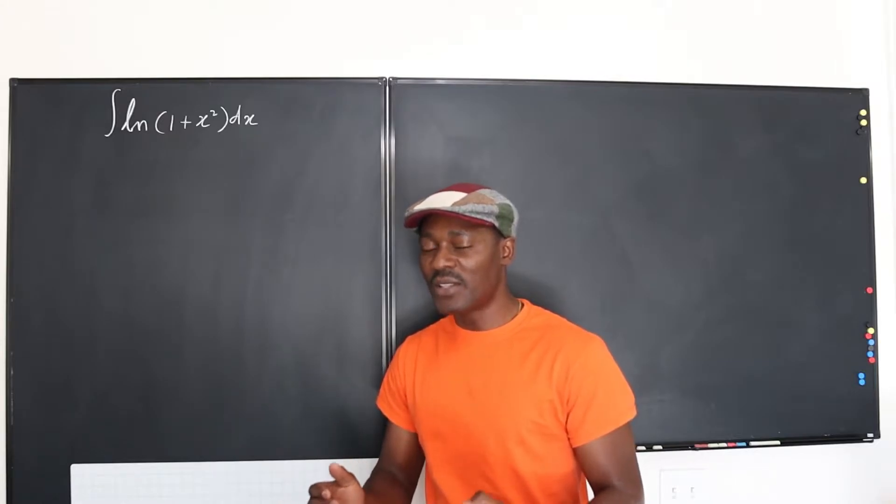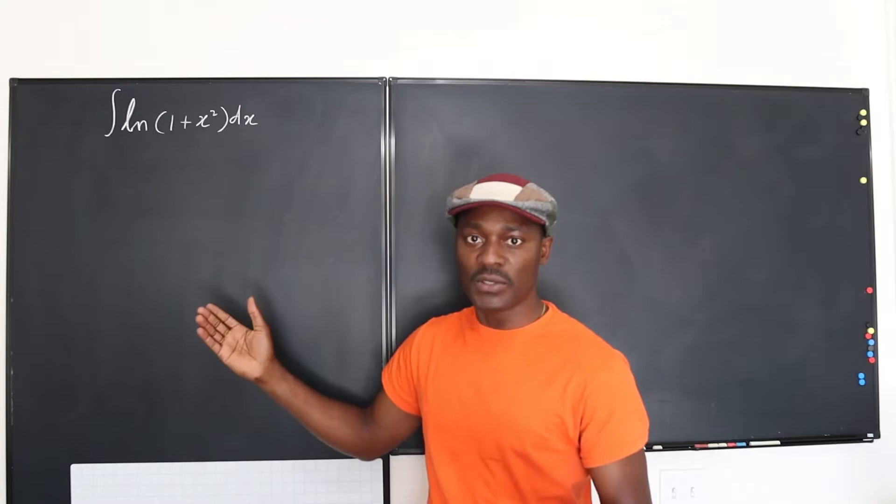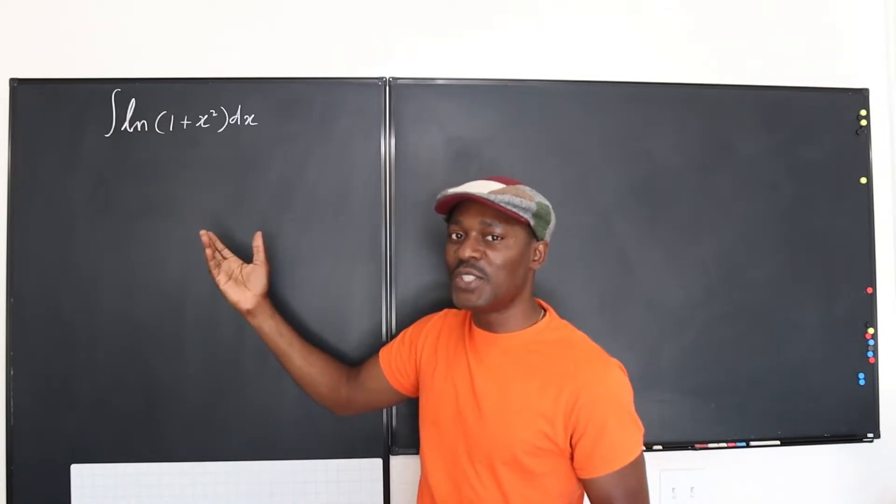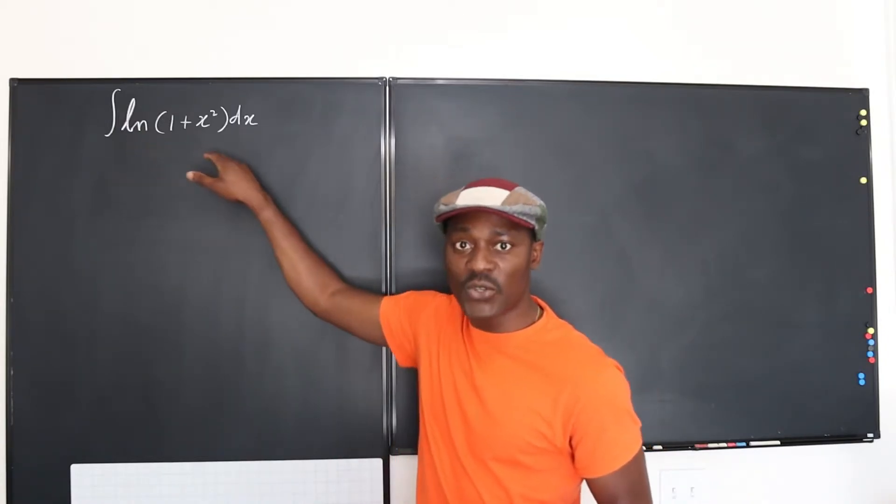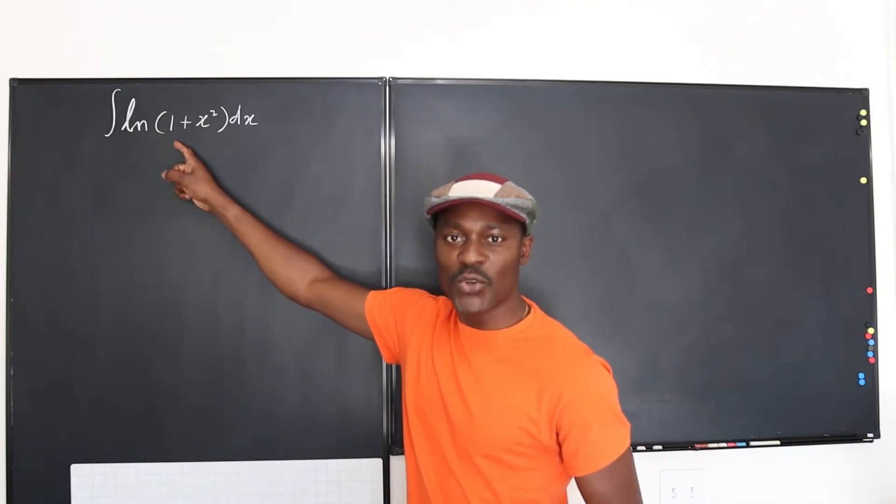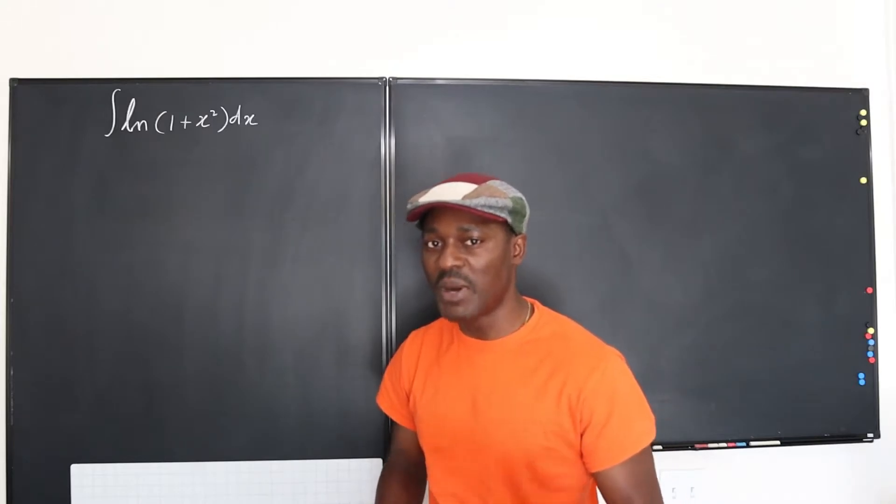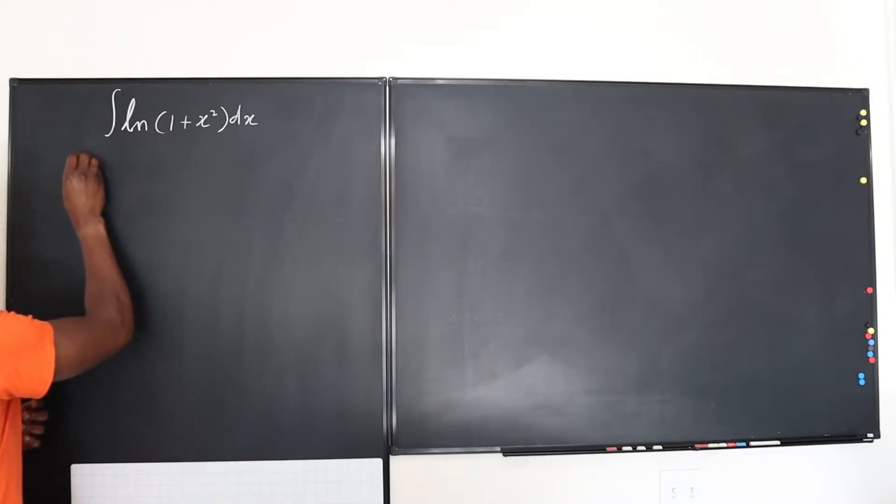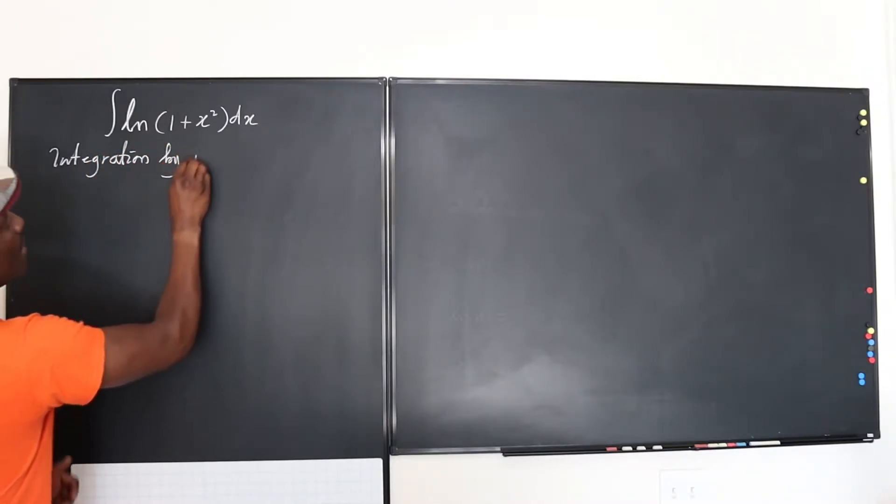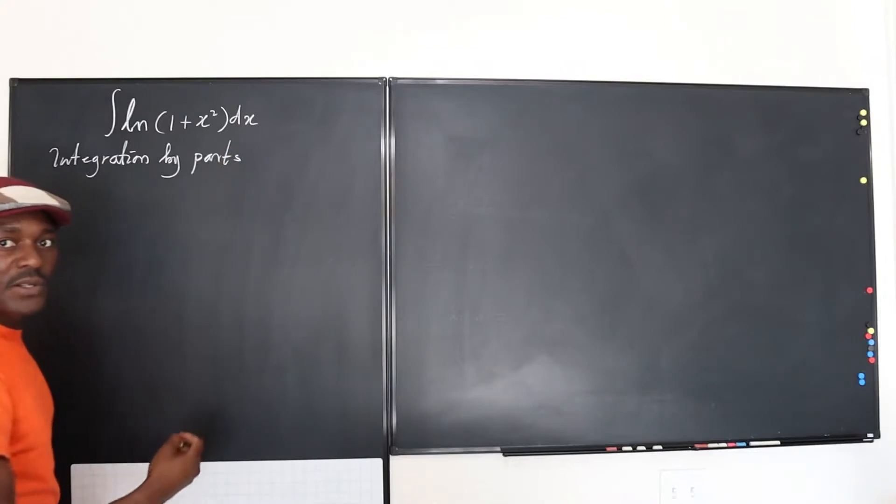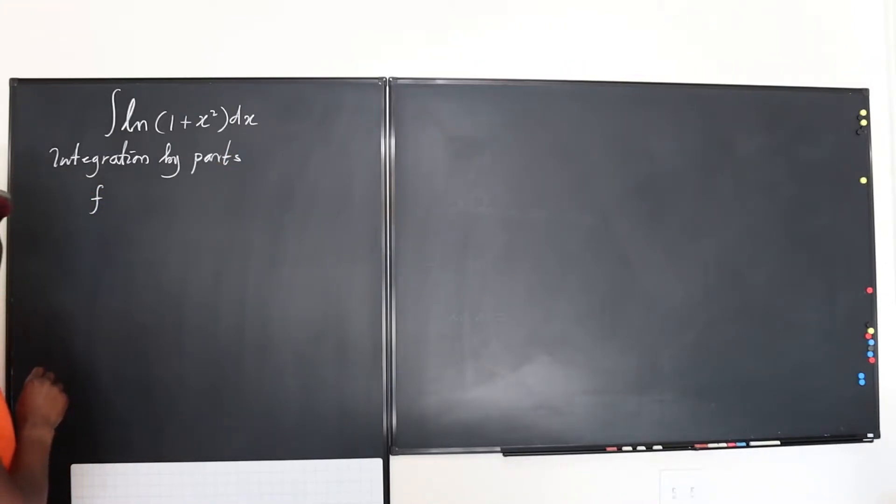So let's start with the knowledge that the only thing you can do to a natural log function is differentiate it, not integrate it. But we're supposed to integrate. So you must remember that there's a technique in integration that allows you to differentiate something. And it's called integration by parts. So integration by parts tells you that when you look at the function, if there are two or more functions, there are two functions, you take one of the functions as something to integrate, and one of the functions as something to differentiate.